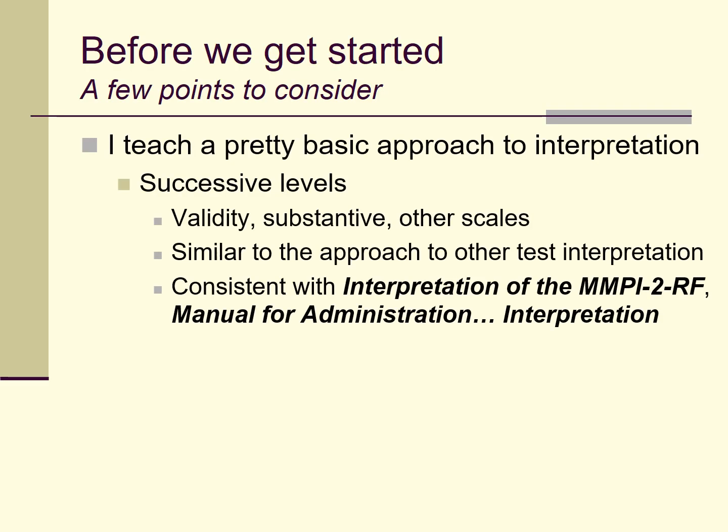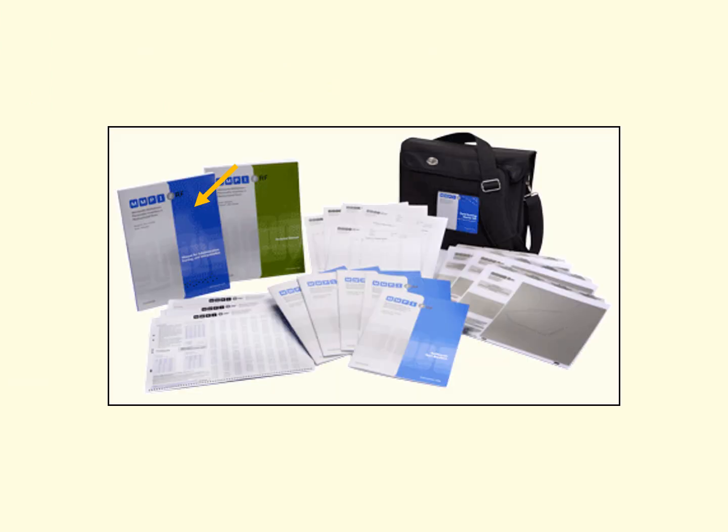I teach a basic approach to interpretation that works from a relatively more general level to a more specific level. In the case of the MMPI-2-RF, we work from the validity scales to the substantive scales to the other scales on the test. This is consistent with Ben-Porath's book and the manual for administration, scoring, and interpretation that ships with the test.